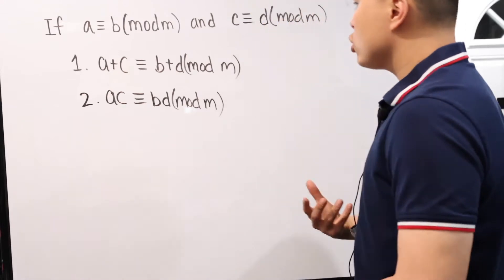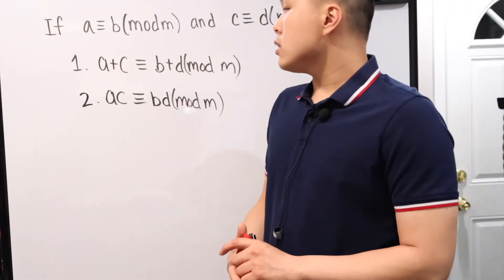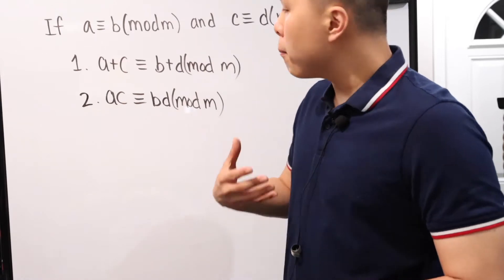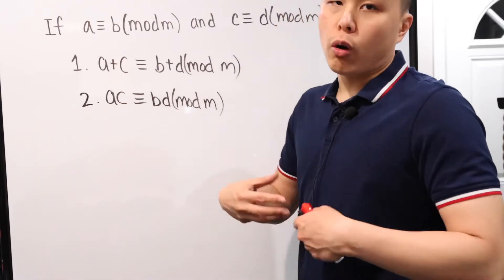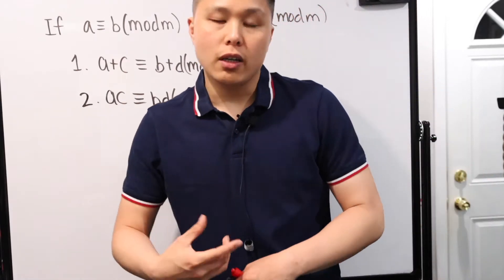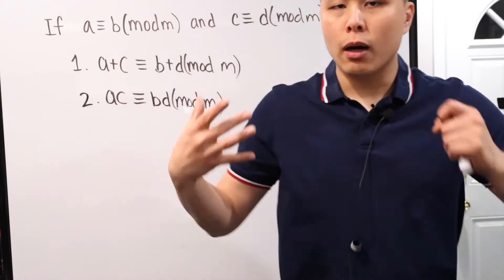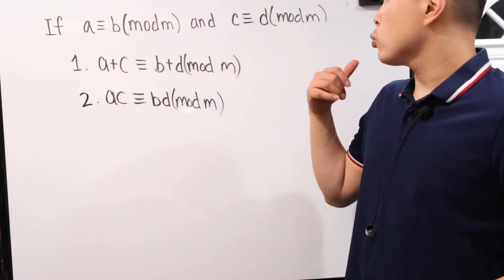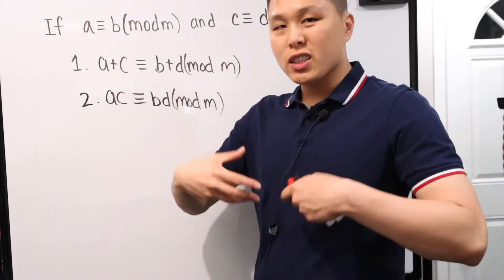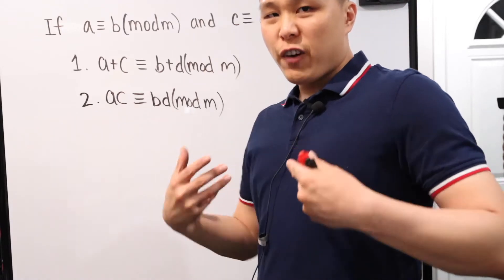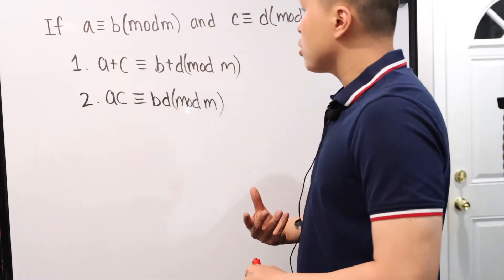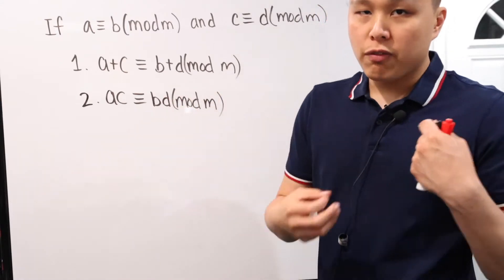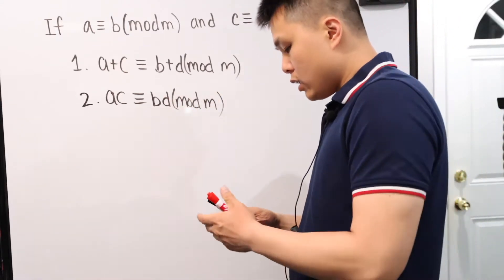Why is this useful? As numbers get larger and larger, it becomes more difficult to work with them directly. When introducing modular arithmetic I used fairly easy numbers, but most of the time you're dealing with fairly large and ugly numbers. These properties allow you to actually work with them and see what we've got.